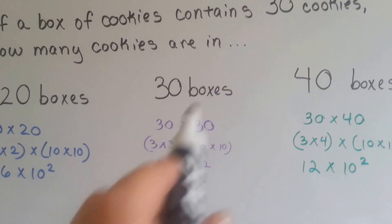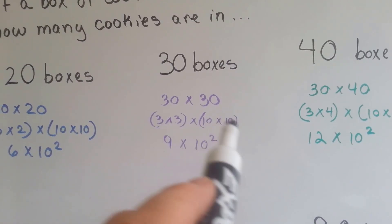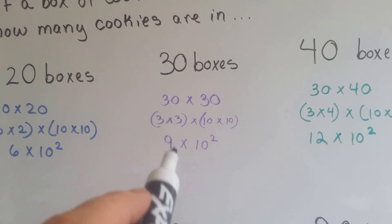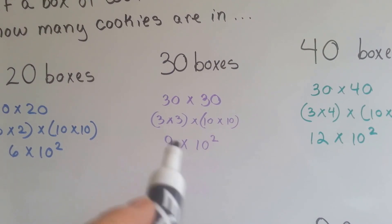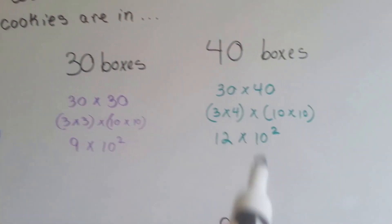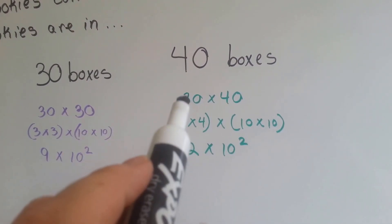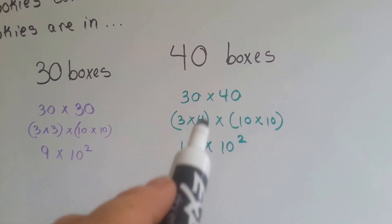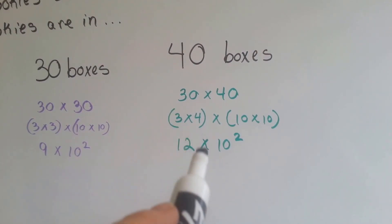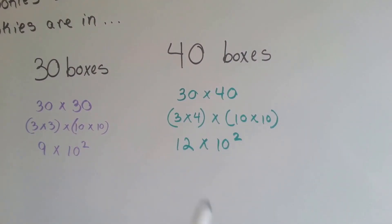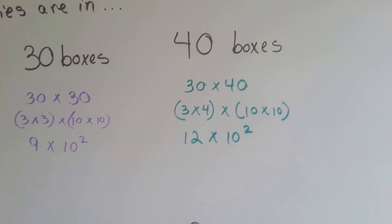How about 30 times 30? It would be 3 times 3 times 10 times 10, giving us 9 times 10 to the second power — that's 900. How about 40 times 30? We put the 3 and the 4 together and the 10 and 10 together. Now we've got 12 times 10 to the second power, which means a 12 and 2 zeros: 1,200.